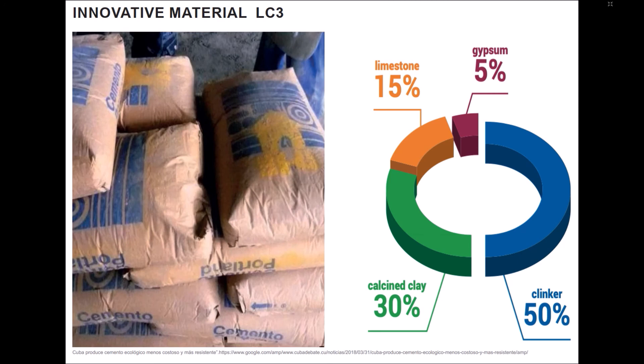Limestone-calcined clay cement is a really new material that has a link between calcined clay and limestone. This influences the reduction of clinker volumes and the most polluting elements in common compositions are reduced. This is an overwhelmingly promising potential for Cuba.